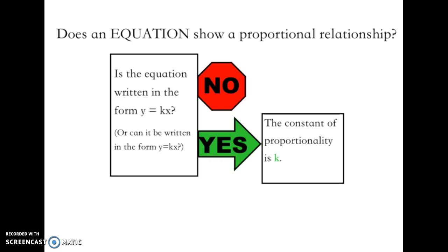And lastly, does an equation show a proportional relationship? Is the equation written in the form y = kx — y equals some number times x? Or can it be written in that form? If it can't, it's not proportional. If yes, the constant of proportionality is k. We're going to look at examples of each of these types to help it make more sense.